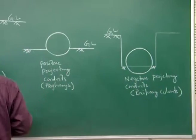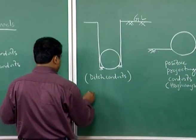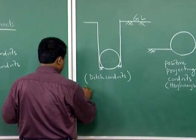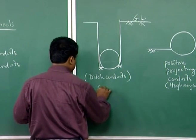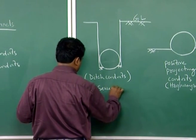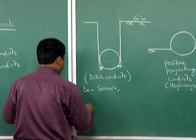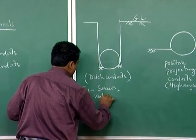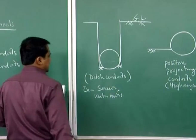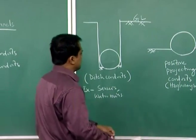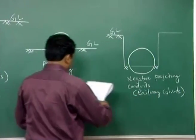For ditch conduits, the example is sewers and water main pipes. In the case of positive projecting conduits the example is highways, and for negative projecting conduits the example is railway culverts.